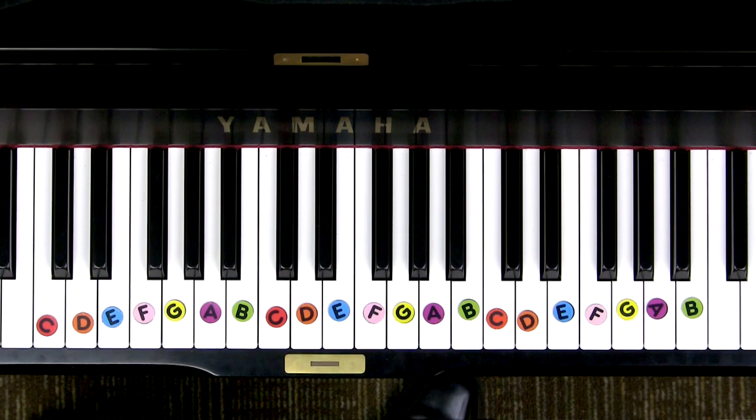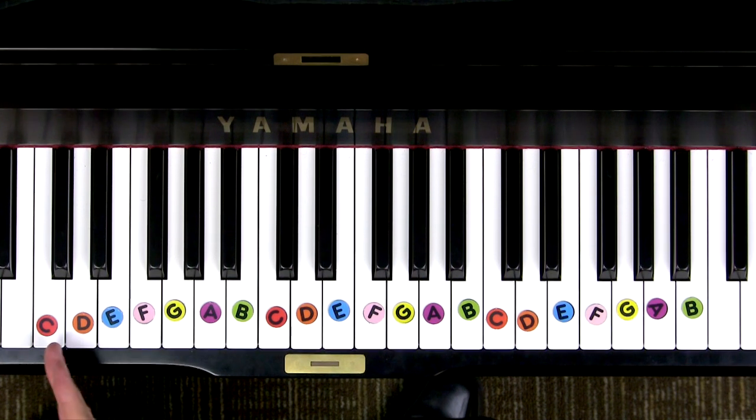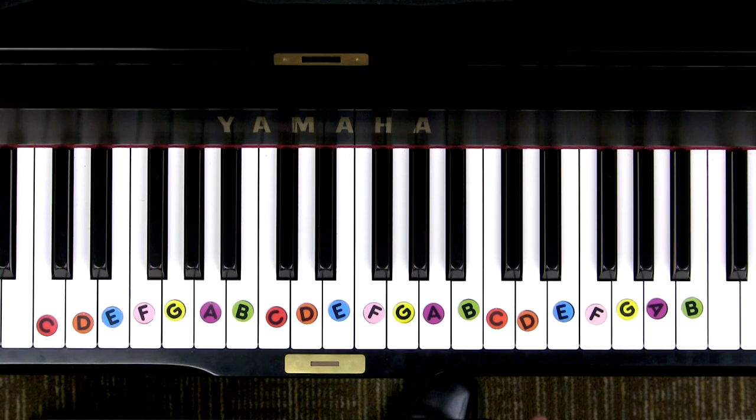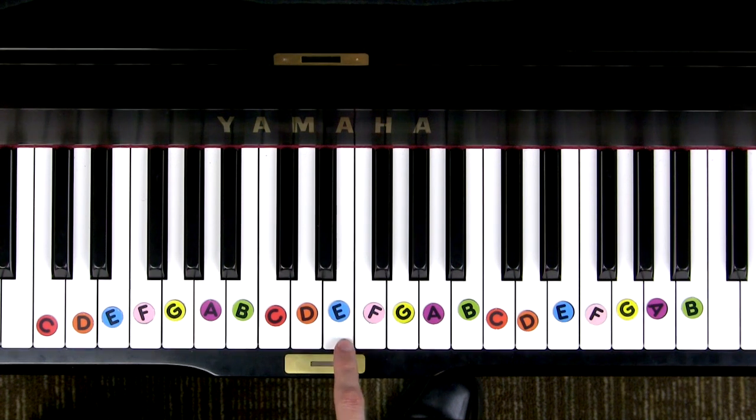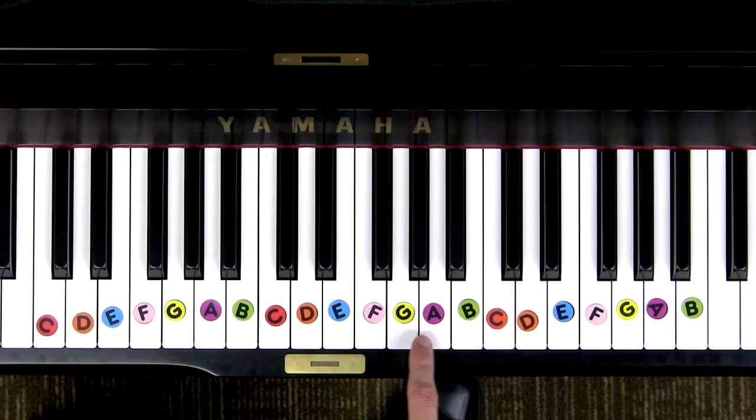Now whoa, look at this. We have the musical alphabet. Did you know that the white keys of the piano form the musical alphabet? If we start on A it's just the same as the alphabet you already know. A, B, C, D, E, F, G.